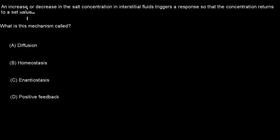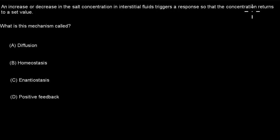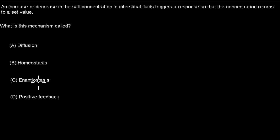The last question: An increase or decrease in salt concentration in interstitial fluid triggers a response that returns the concentration to a set value. What is this mechanism called? A. Diffusion. B. Homeostasis. C. Enantiostasis. D. Positive feedback. Pause the video.